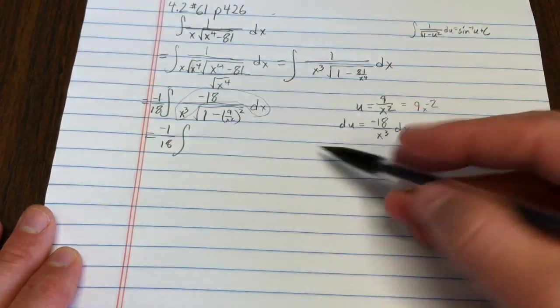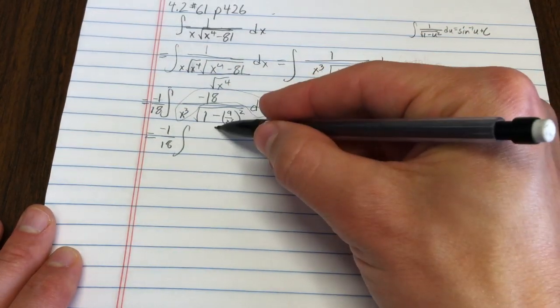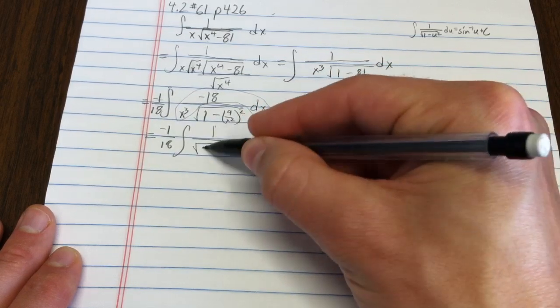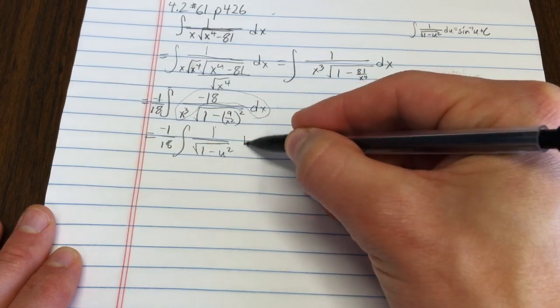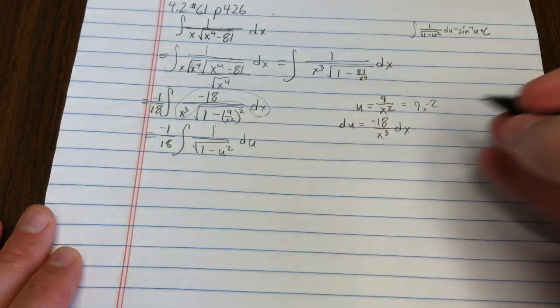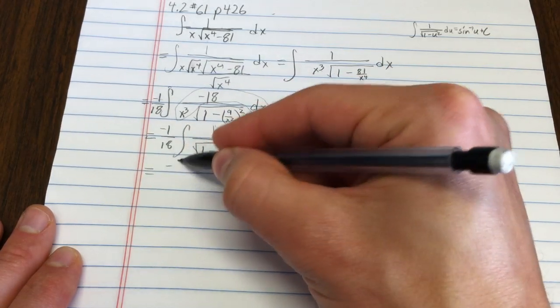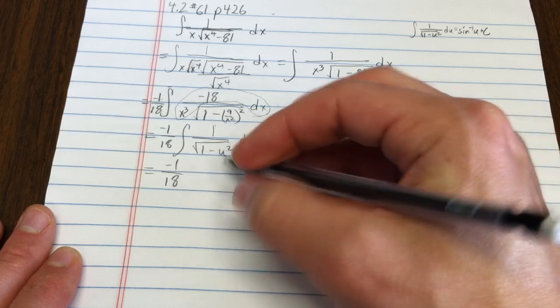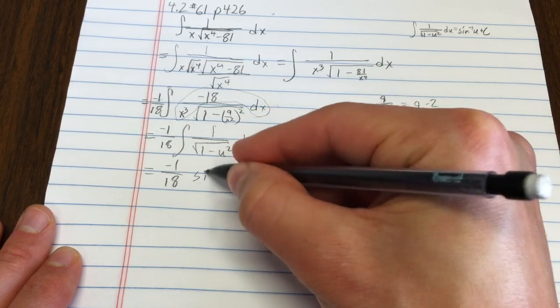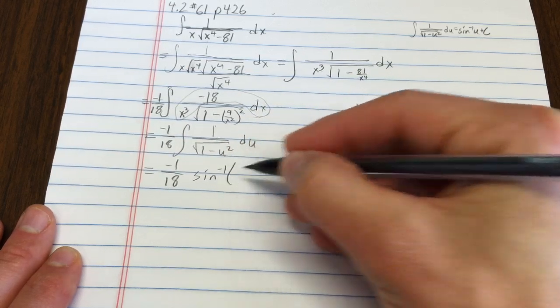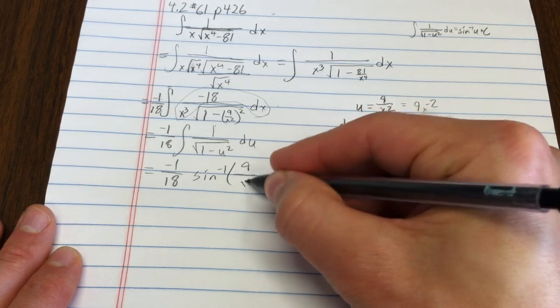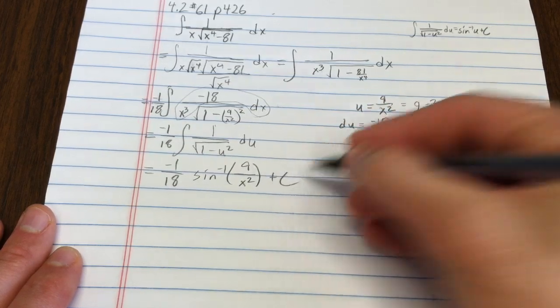So now I have 1 over the square root of 1 minus u squared du. And then that's negative 1 18th arcsine of u, and I'll just go ahead and write in what u is, plus c.